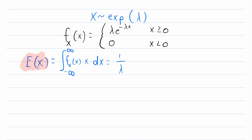The expected value of a distribution is the average over a large number of outcomes. As you run more and more trials, the average of all the outcomes will get closer and closer to the expected value. In this case, we know that expected value is 1 over lambda, but let's see why that's true.